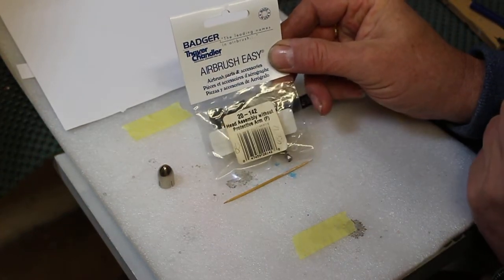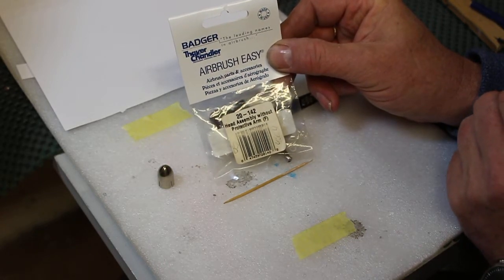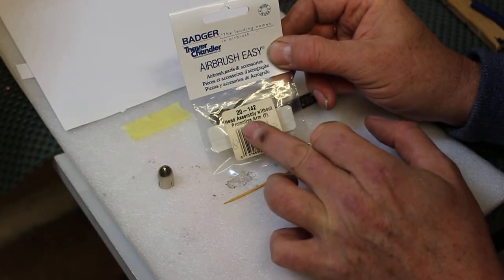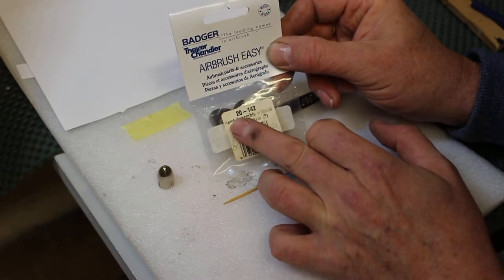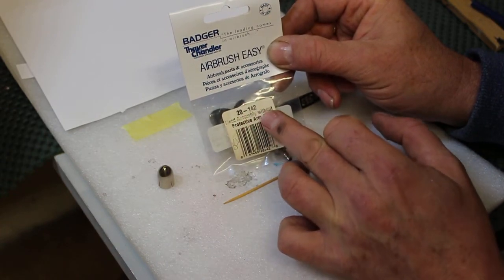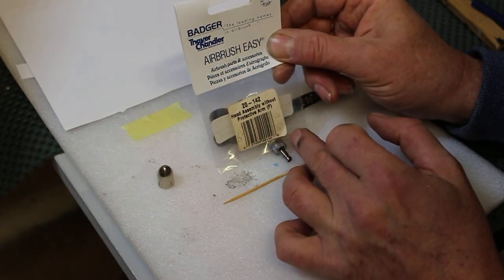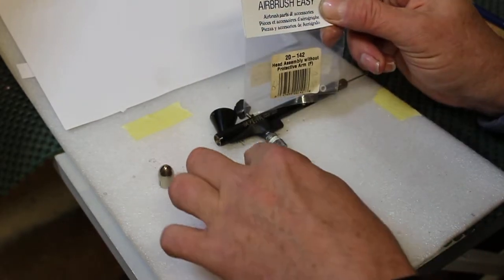I went online, and I went on to a company I think they're called Barbell Works over in England, and I've got a head assembly without the protective arms. And the F shows that it's for the fine needle, and the code is 2142. So I bought this, and I'm going to just replace it. It'll just show you that there's no mither in actually doing this, no worry about doing it.